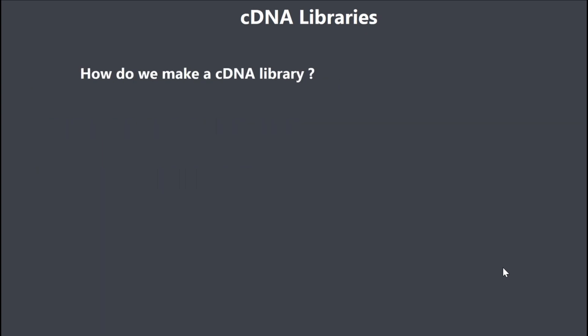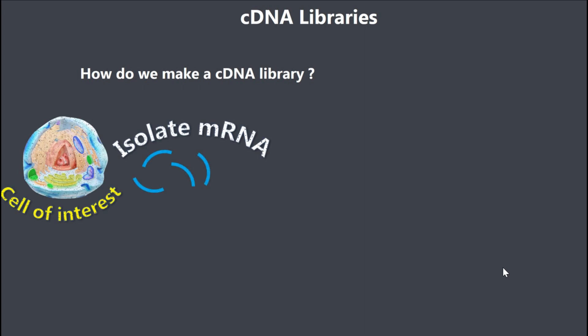Now let's have a look at how we would make a cDNA library. We are going to start off by isolating the messenger RNA. Messenger RNA is the RNA that is being expressed in the cell — that's what ultimately determines the proteins that are going to be produced by the cell.